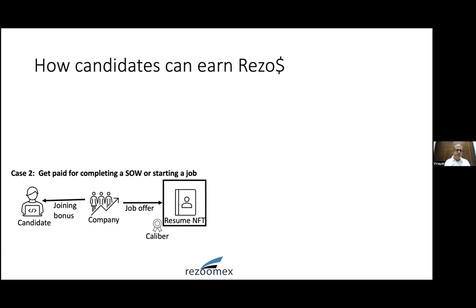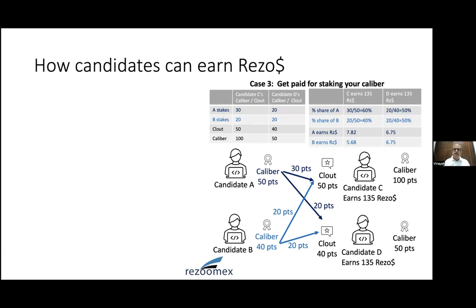There are three ways a professional can earn: first, getting paid for data when companies de-anonymize their profile; second, getting paid for completing work — jobs, freelance contracts, or small tasks; and third, earning by staking caliber on others and sharing in what they earn. For example, A and B both stake caliber on C and D. A stakes 30 on C and 20 on D; B stakes 20 on C and 20 on D. C's total clout is 50, and D's total clout is 40.